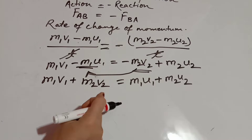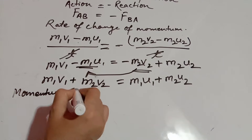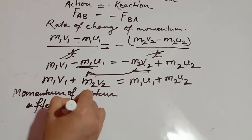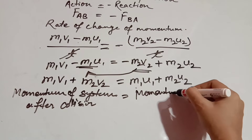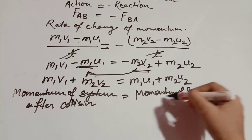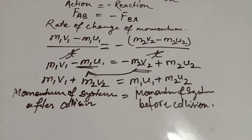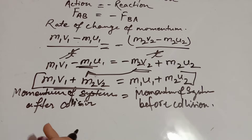M1 V1 plus M2 V2 is the momentum of the system after collision, and M1 U1 plus M2 U2 is the momentum of the system before collision. This proves the law of conservation of momentum — the total momentum of the system before collision is equal to the total momentum of the system after collision, meaning the total momentum of the system is constant.